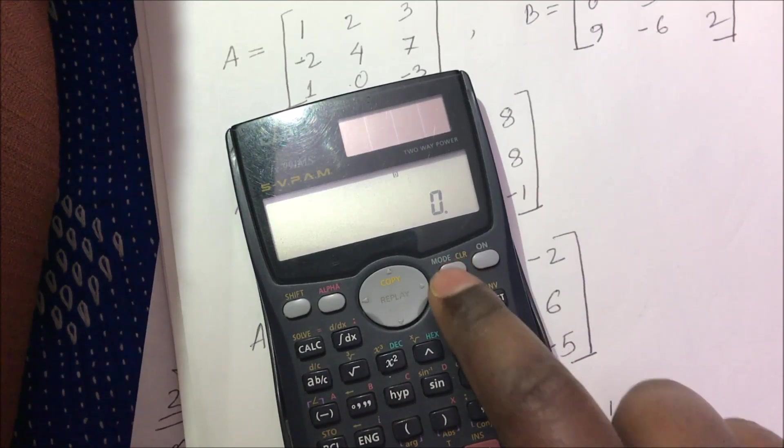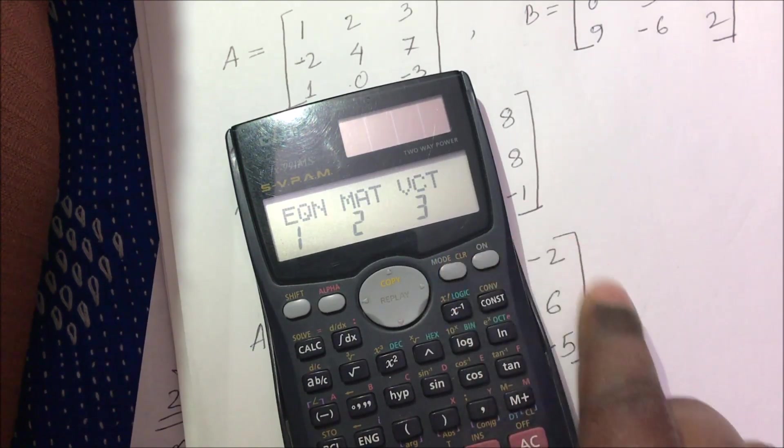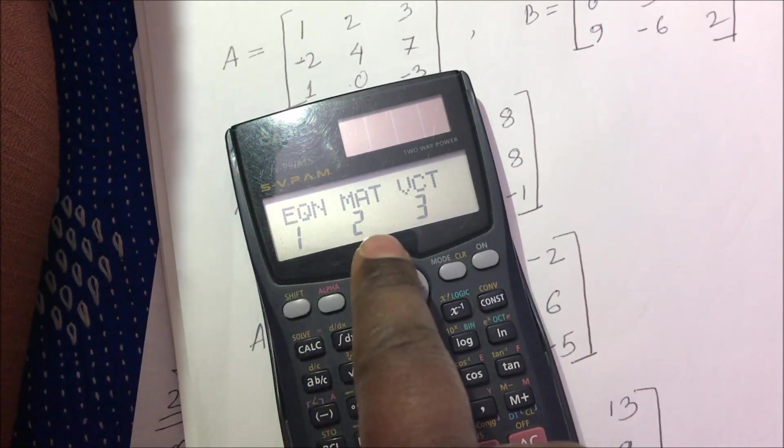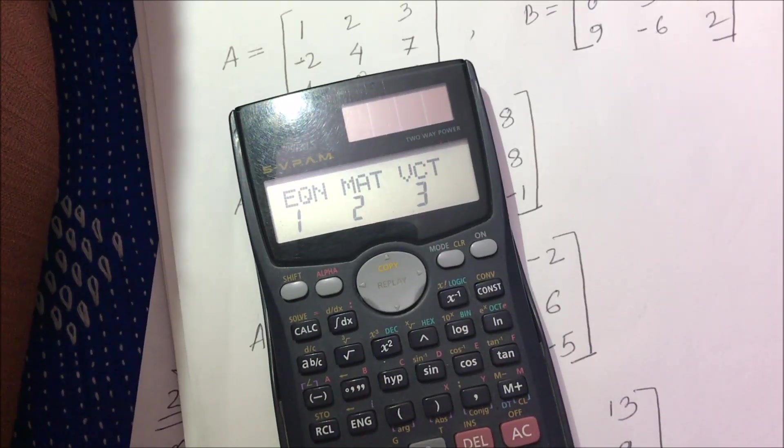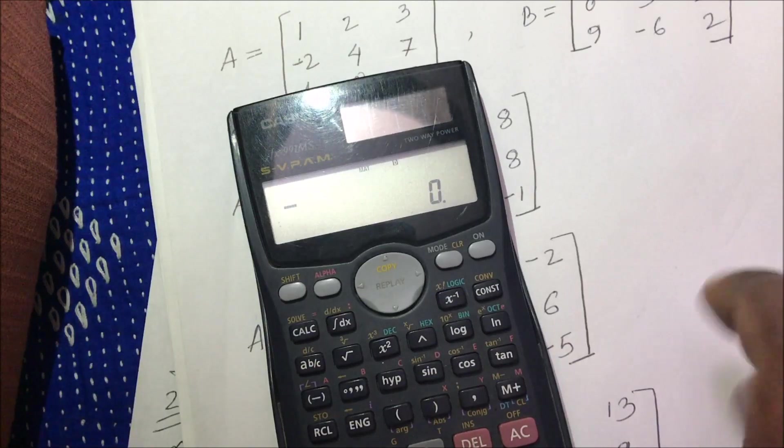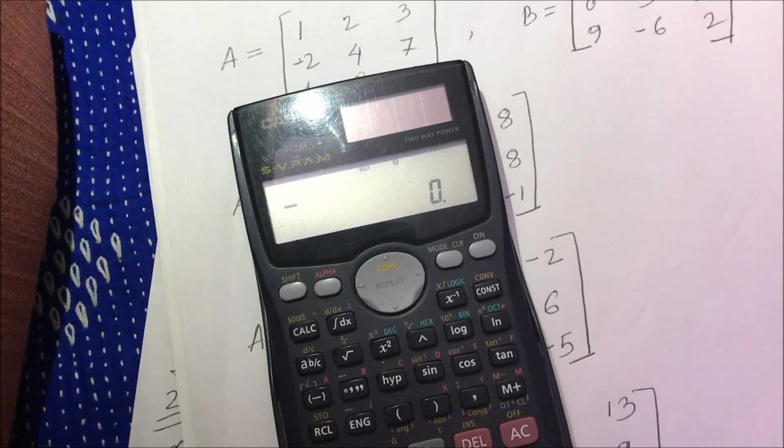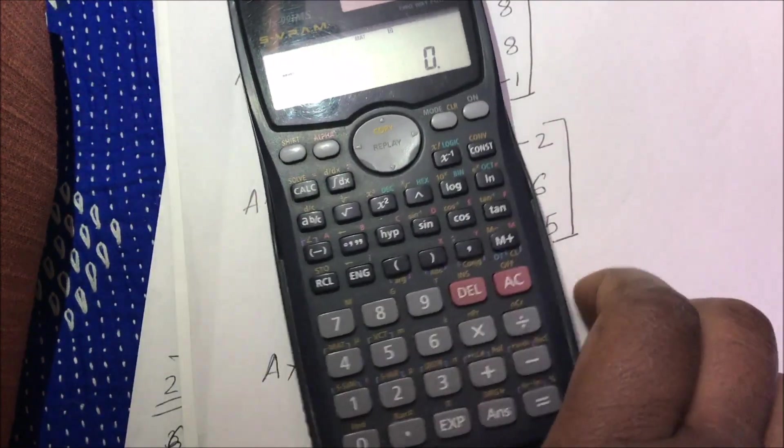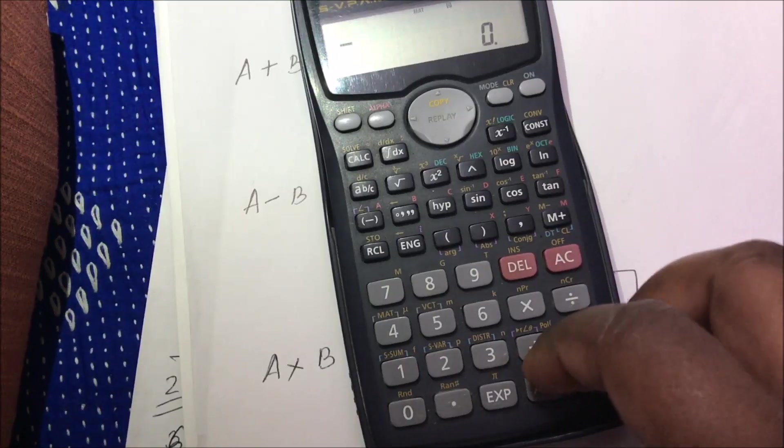First of all, turn on your calculator and then go to your mode button. Press mode one time, second time, third time. Then you will see equation mode, matrix mode, and vector mode. Press 2 to make your calculator ready to do matrix. Now your calculator is set for matrix mode.